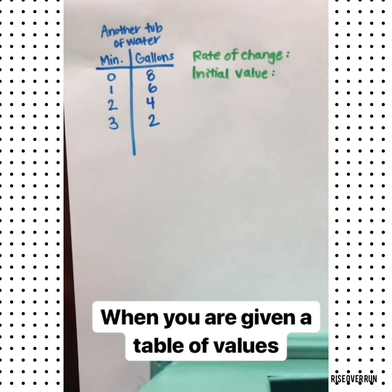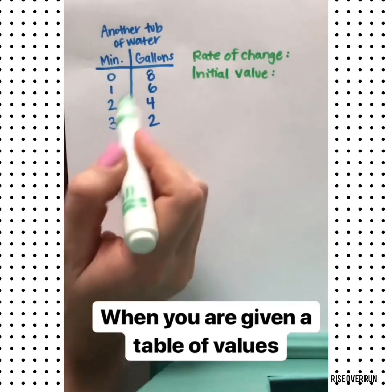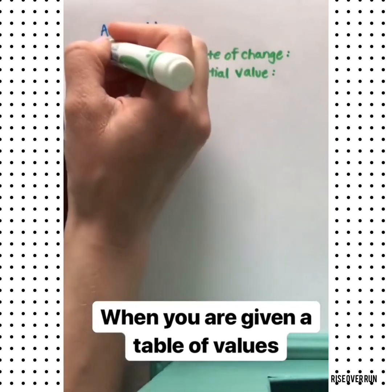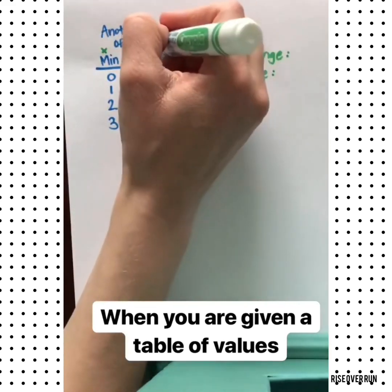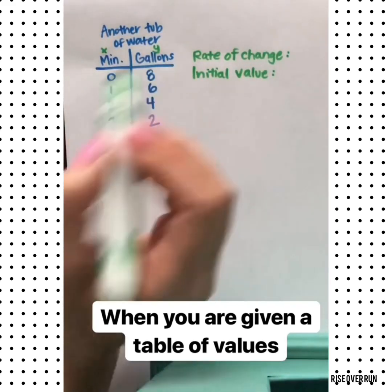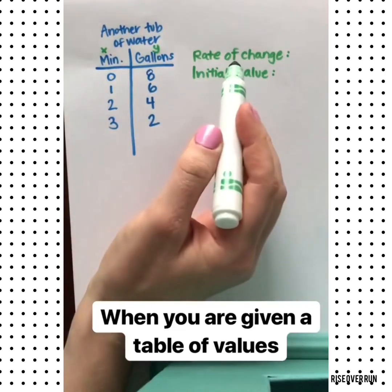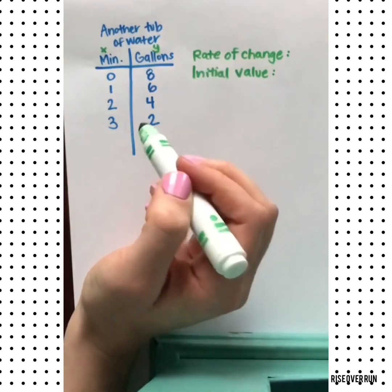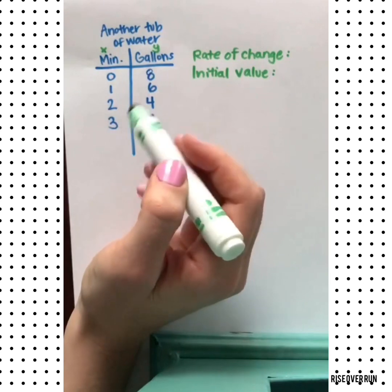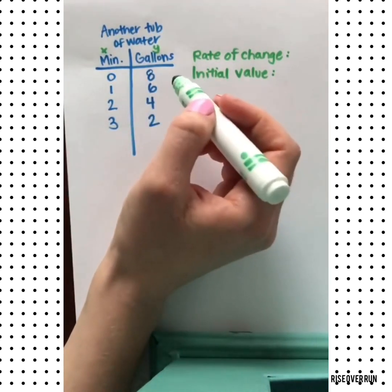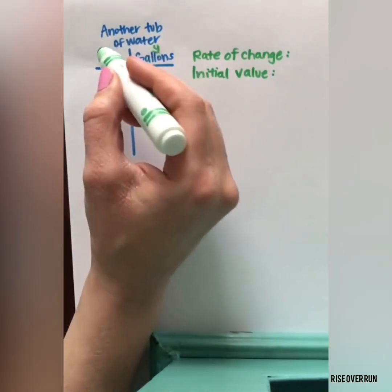Now let's look at a table of values. This represents another tub of water. So we have minutes and we have gallons. Typically your tables will be set up with your independent and dependent variable x and y. If you want to find the rate of change, that's the slope. Now you could graph these points or we can just look for a change in y over a change in x.